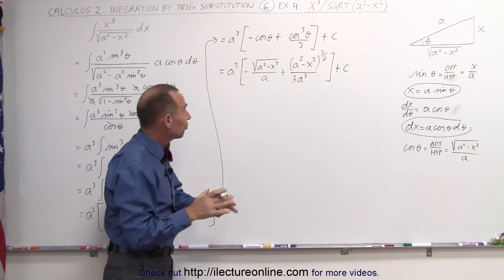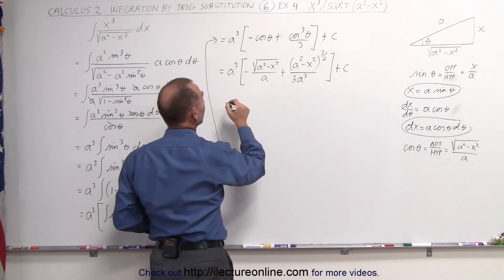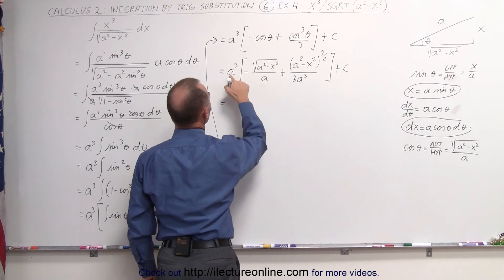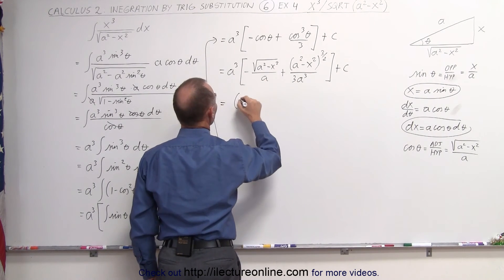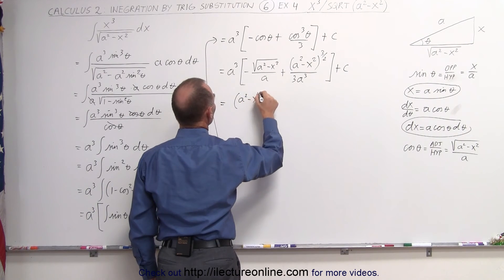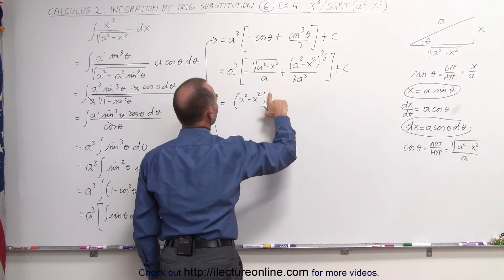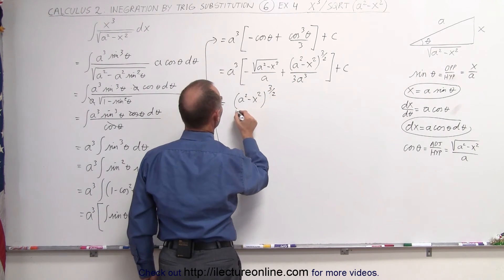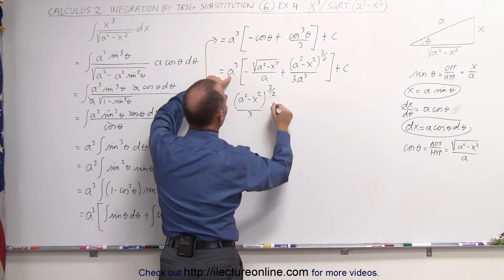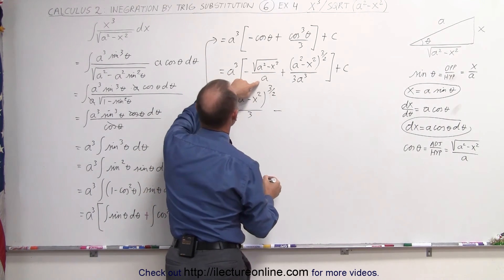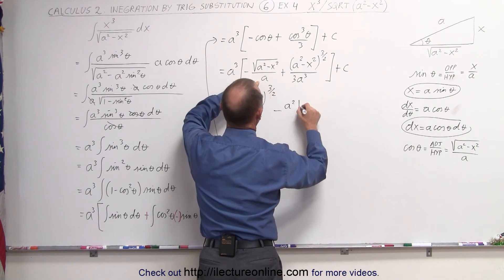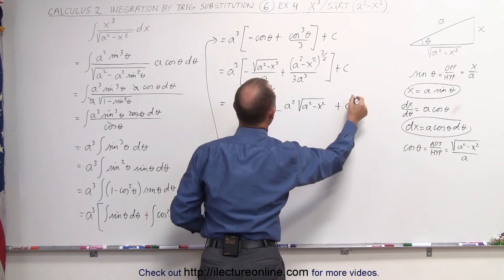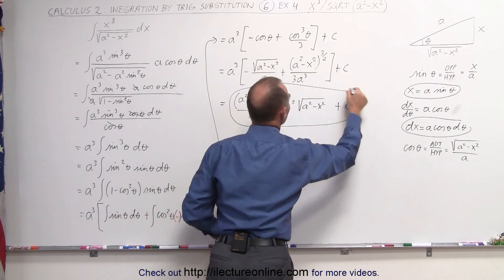Now we can simplify. The a cubed and a cubed cancel out, giving us a squared minus x squared to the 3 halves power divided by 3, and then the a cubed cancel out from the other term, leaving minus a squared times the square root of a squared minus x squared, plus a constant of integration. That would probably be the best way to leave the answer.